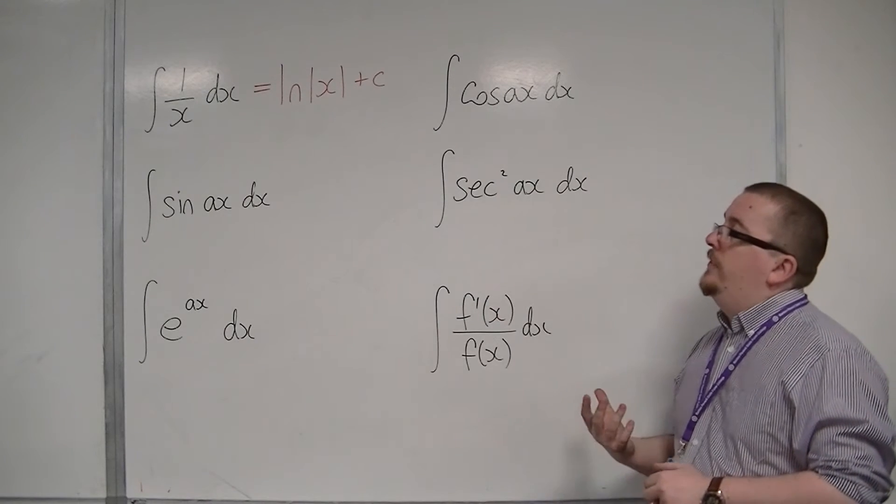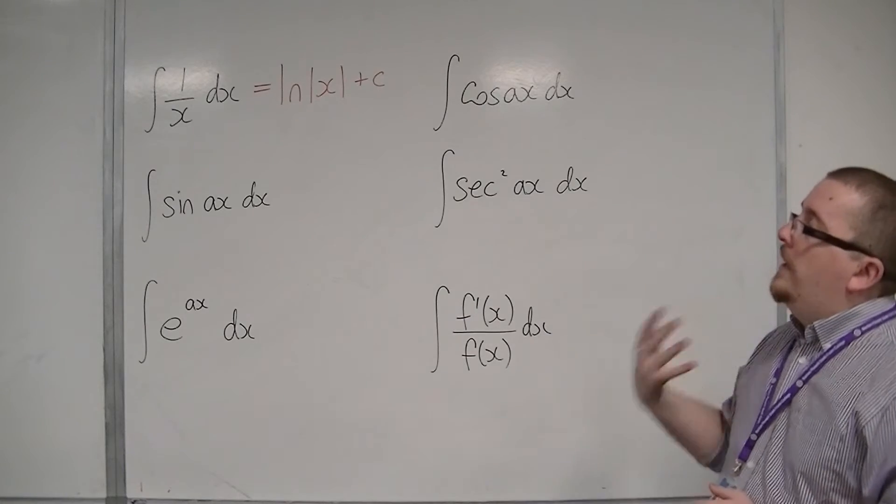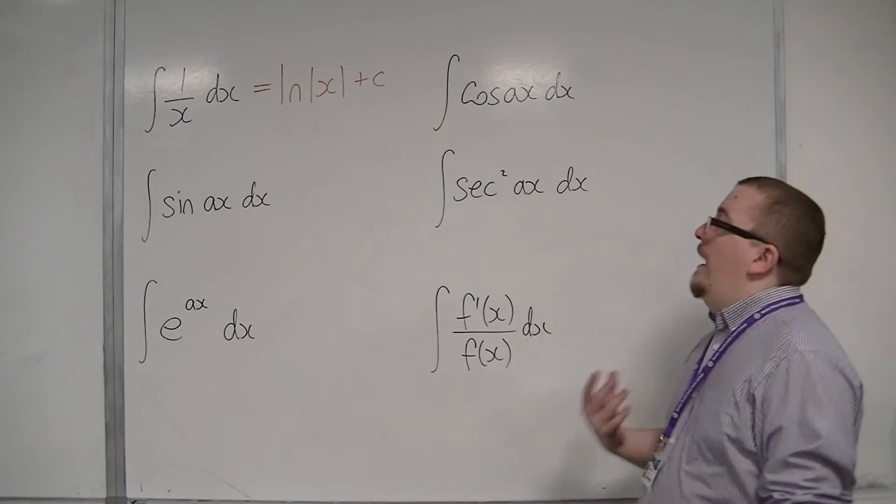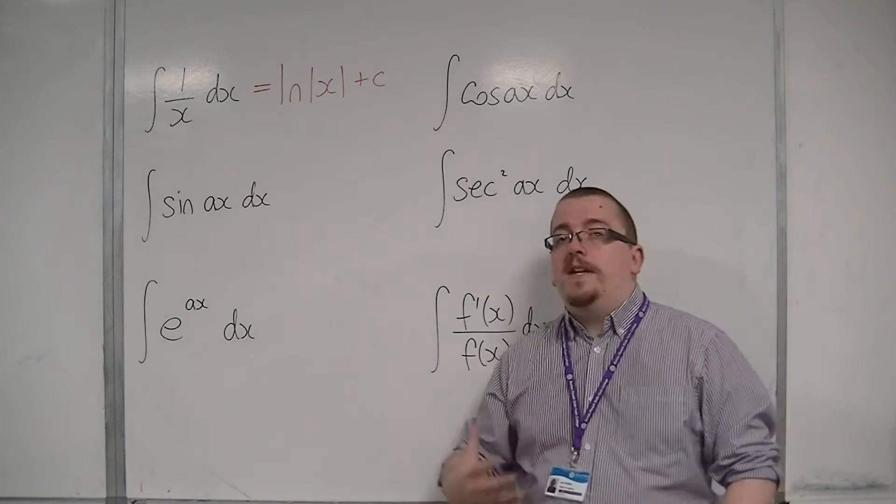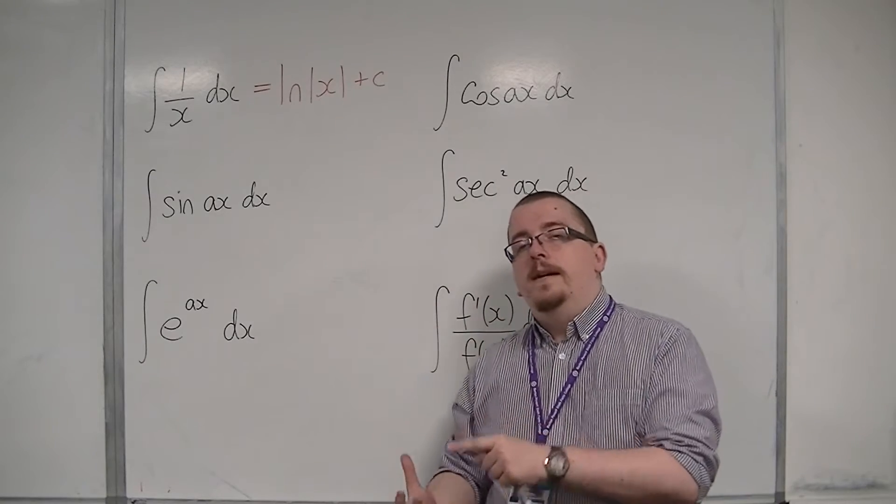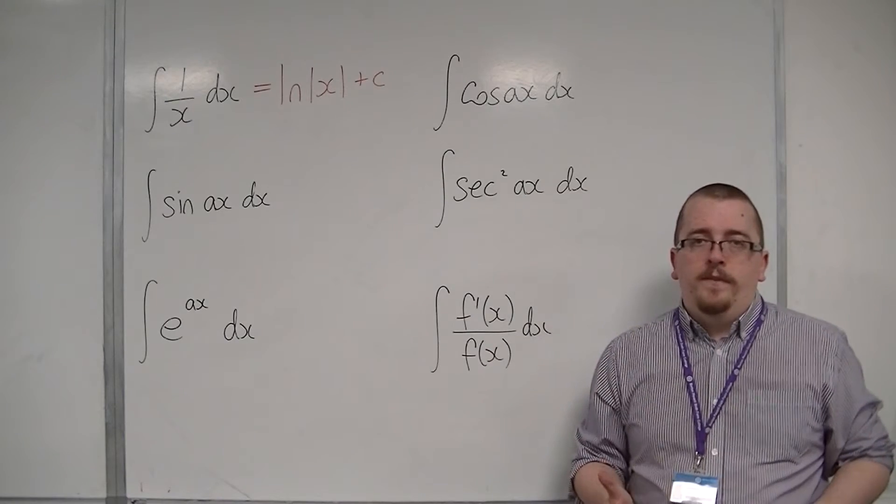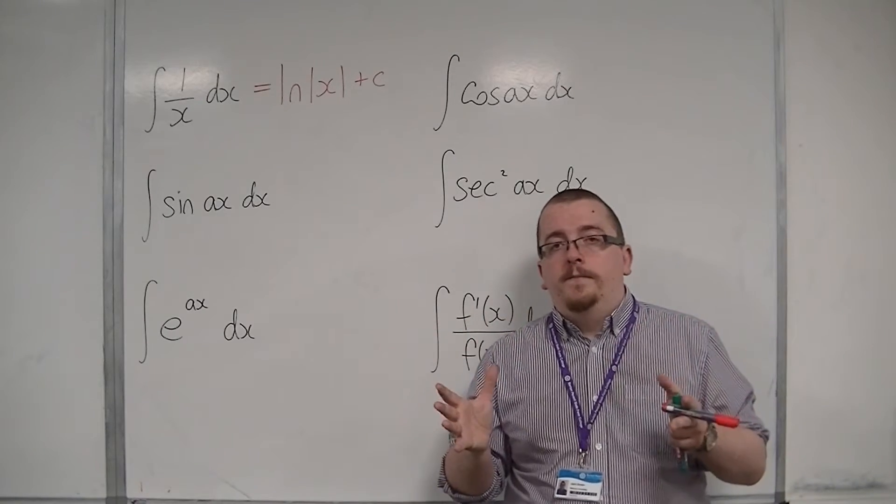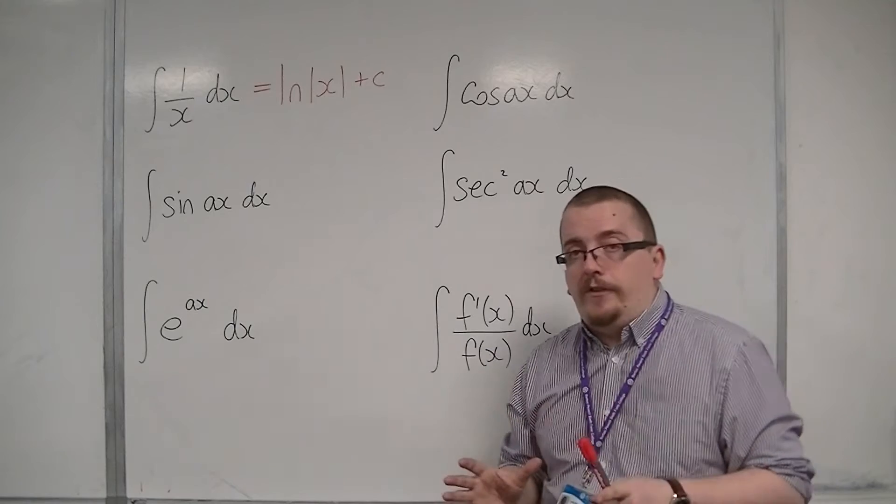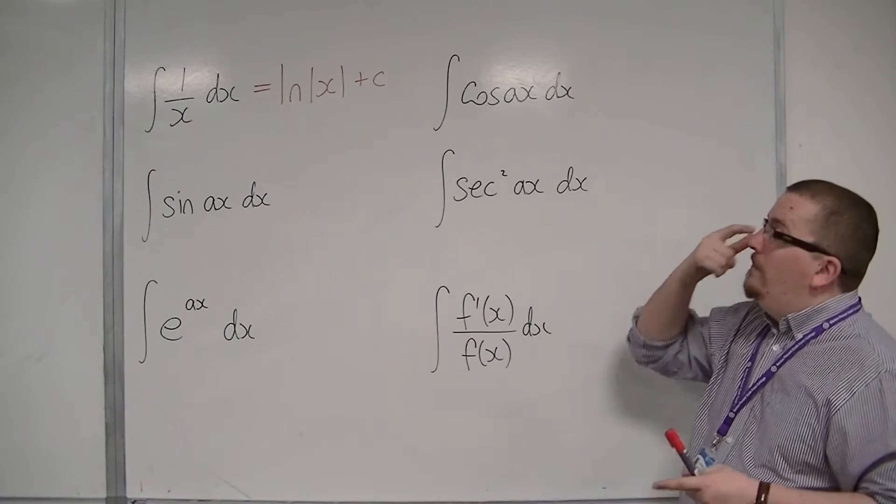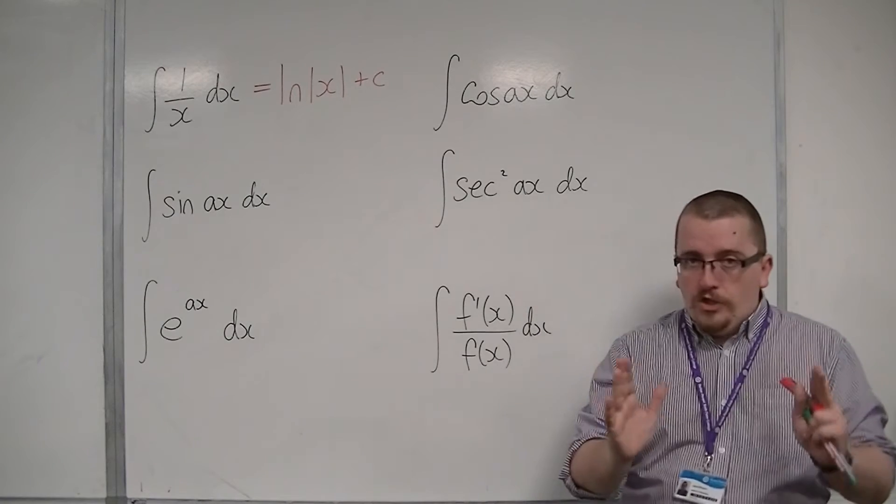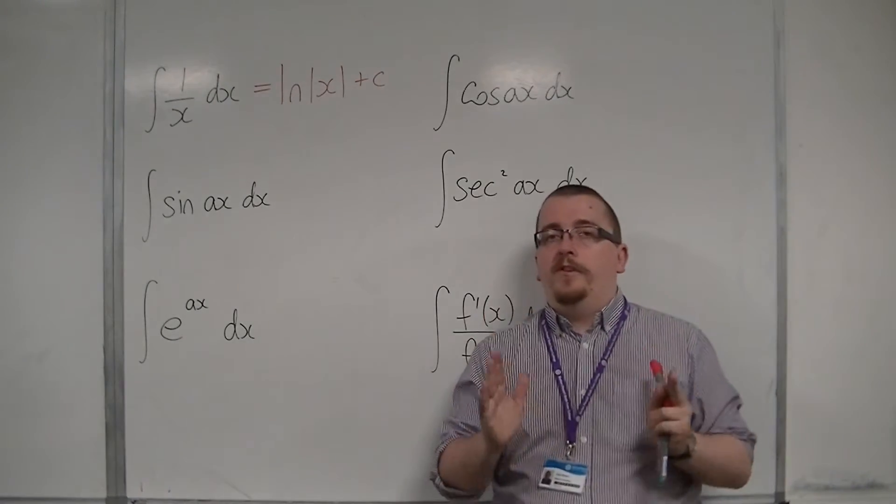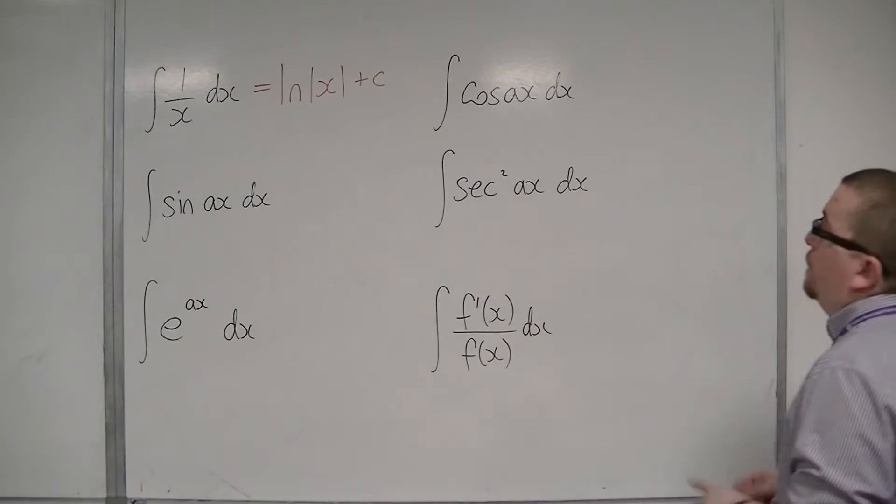Because if you integrate a function and you get log of x and then you want to evaluate it, then what happens is that you could potentially, in plugging values in and evaluating your integral, get log of a negative number. If that is the case, then the integral doesn't work because log of a negative number doesn't exist. So in order to make sure that it does work, we put modular signs around what is going into the logarithm, so you will always be taking log of a positive number. So be aware of that.